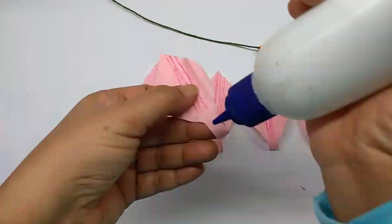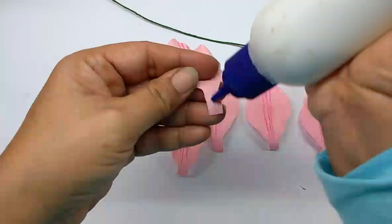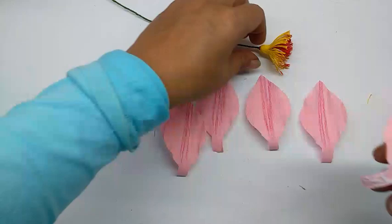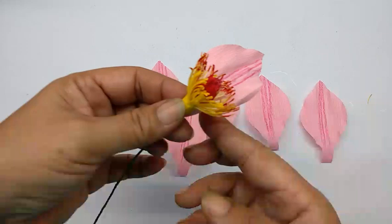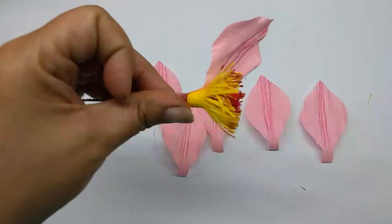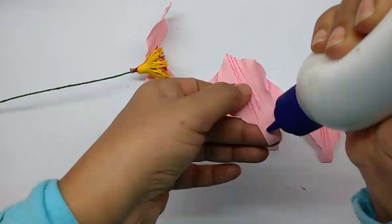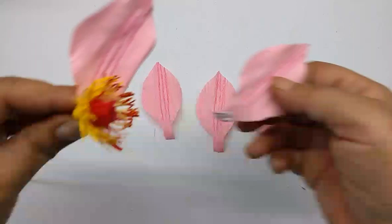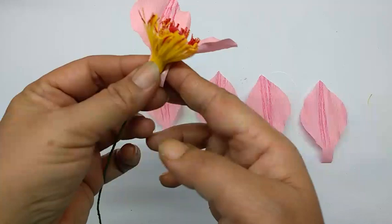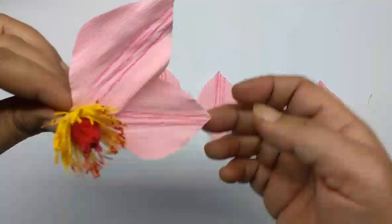Take the petal, apply glue on the base, and stick this on the center that we've made, just below the stamen. Stick all the other petals in the same way, slightly overlapping each other. Just overlap it a bit so it will be slightly below the first one. Stick all the other four petals the same way.